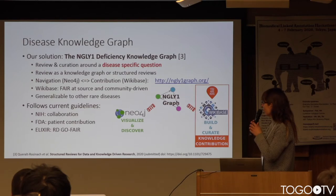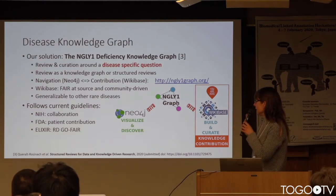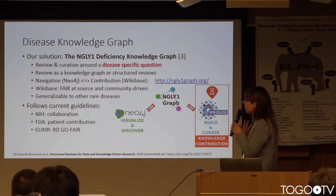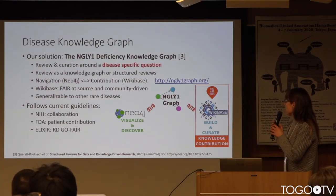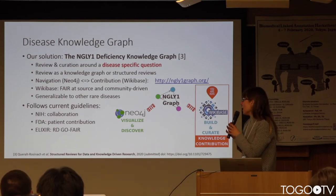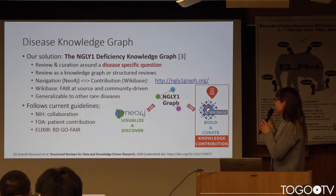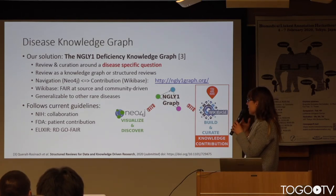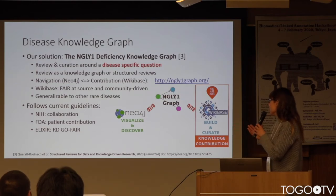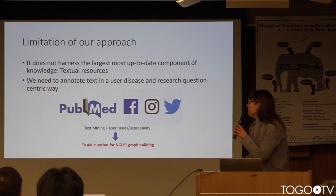Our solution was to develop a disease-centric knowledge graph — the NG1 deficiency knowledge graph — where the most important contribution was the curation part. We also integrated information from different databases, keeping it centric to the disease and specific research hypothesis. We structured the knowledge as a knowledge graph, which we call a structured review, and built an application for the community to navigate and contribute. This is based on Wikibase, which allows making the graph FAIR, and is community-driven. It can be generalized to other rare diseases.